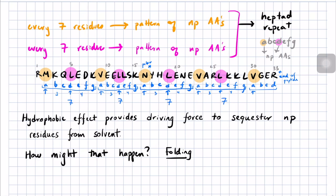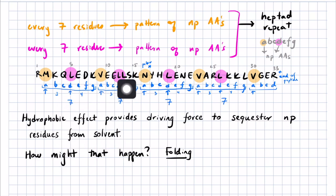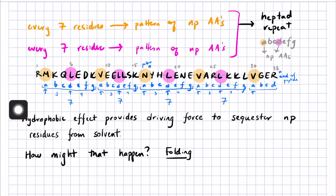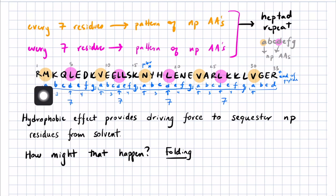In orange are nonpolar amino acids that repeat every seven residues. And in pink are nonpolar amino acids that also repeat every seven residues. Together these two patterns comprise an A, B, C, D, E, F, G repeating sequence which we're calling a heptad.